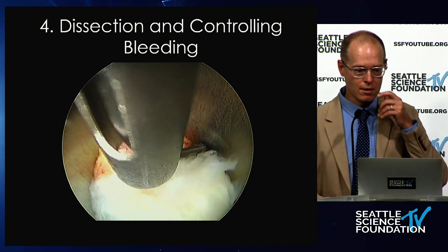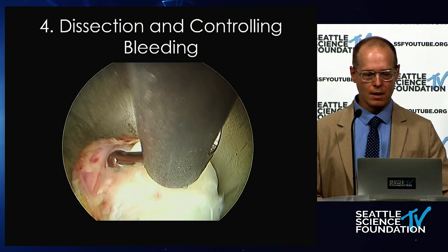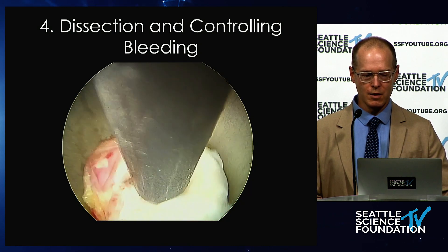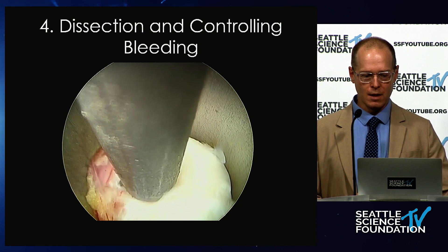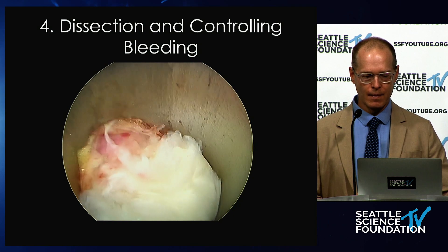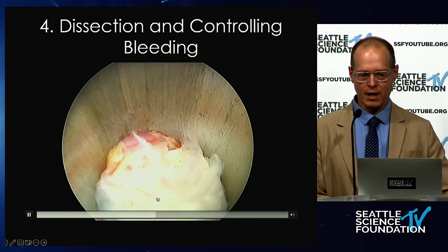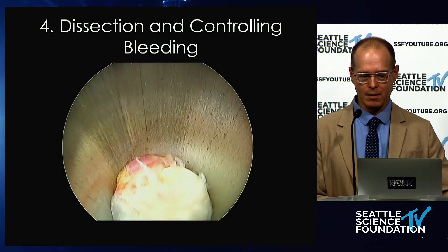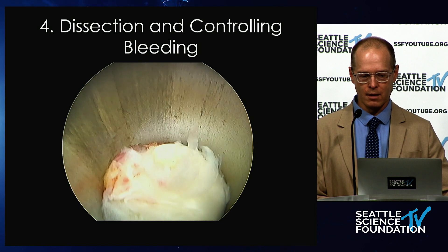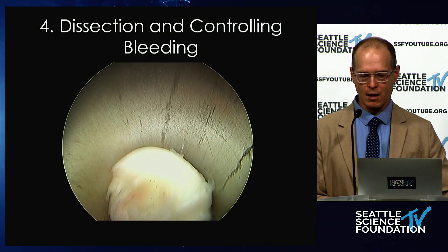The next part is dissecting the nerve. Sometimes there are adhesions on the disc, and also epidural veins that might bleed, so you want to get those out of the way. You can see here I'm using an angled nerve hook dissector — you can use a number of different tools to do this. Once you have that dissected, this is where we make the move to rotate or retract the traversing nerve root out of the way.